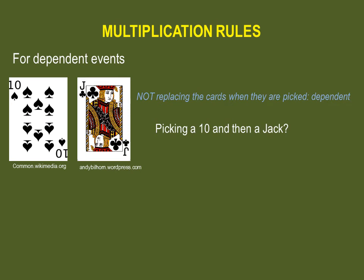Let's do an example using the multiplication rule for dependent events. Suppose you draw a card from a deck of cards and do not replace it. What is your probability of picking a ten on the first card and then a jack on the second card? Since you are not replacing the card in the deck, this influences the odds for your second draw. Event A would be picking a ten — you have four out of fifty-two chances of picking a ten.